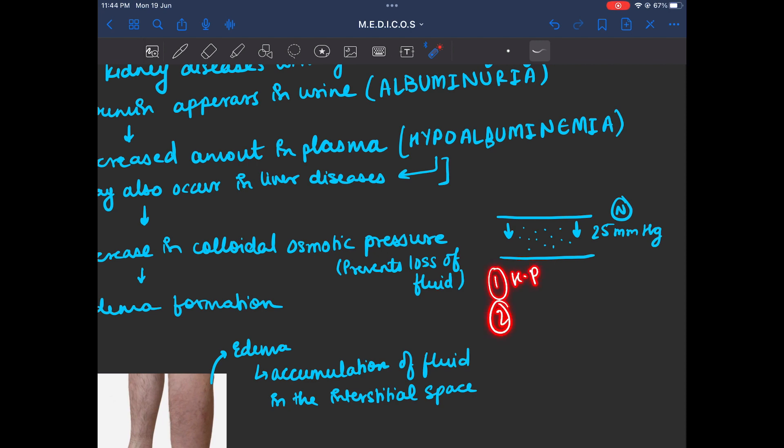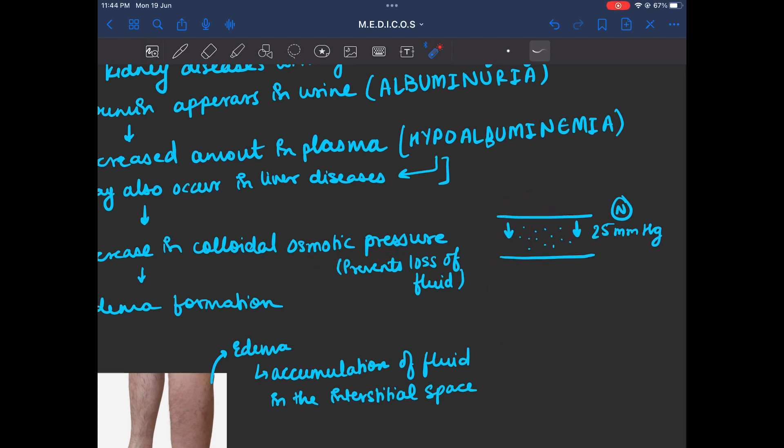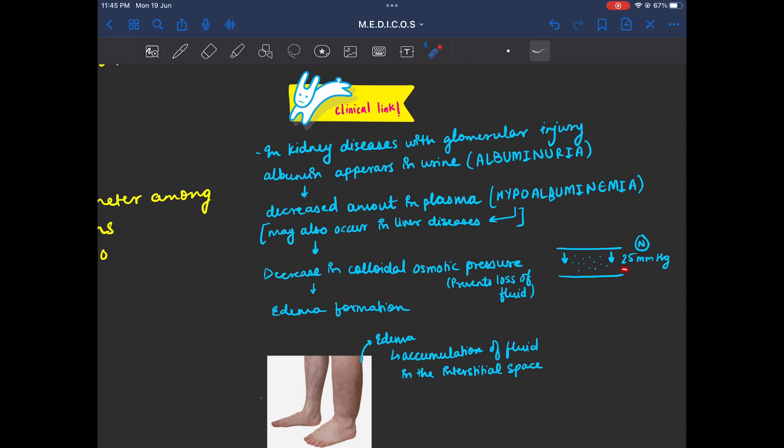The hydrostatic pressure is that in intravascular compartment to extravascular compartment fluid push and the colloidal osmotic pressure is to maintain the fluid in the vascular compartment. Normal colloidal osmotic pressure is 25 mmHg.